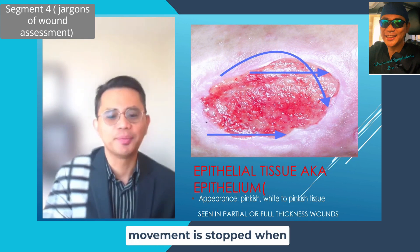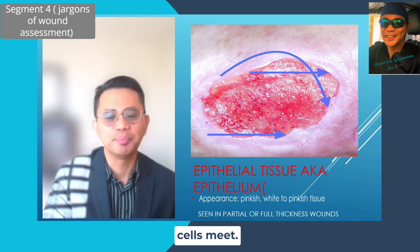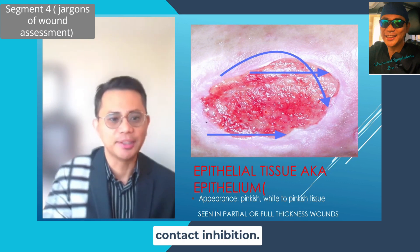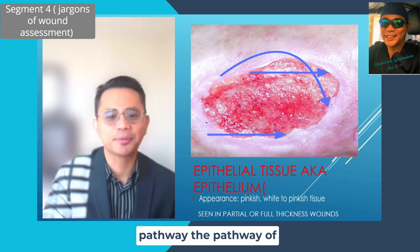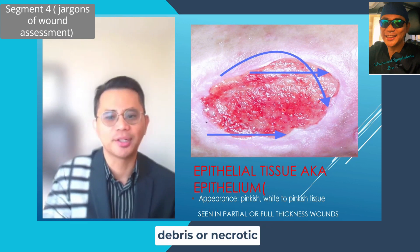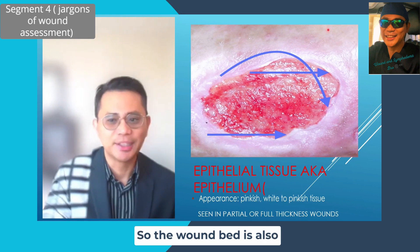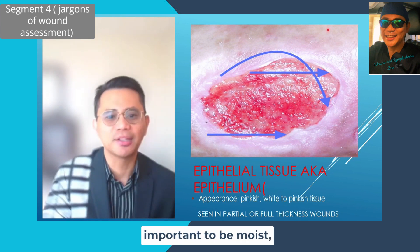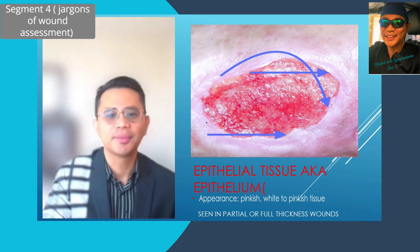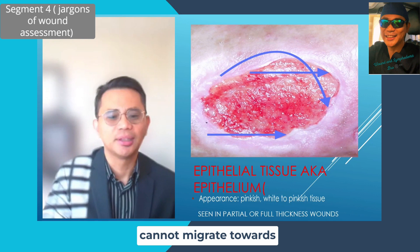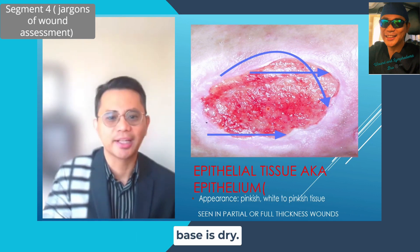The horizontal movement is stopped when cells meet, and this is known as contact inhibition. It is crucial that the pathway of these migrating cells towards the center should be free of any debris or necrotic tissue, or they will not be able to migrate completely. The wound bed must also be moist, as these new cells cannot migrate towards the center if the wound base is dry.